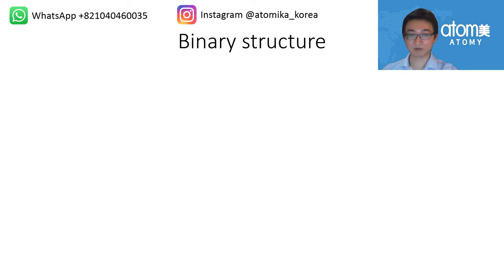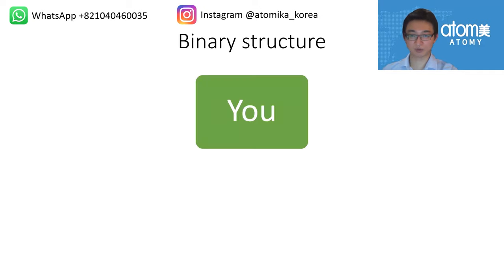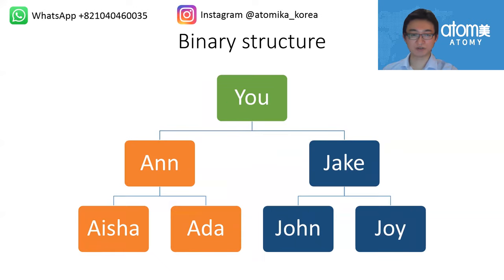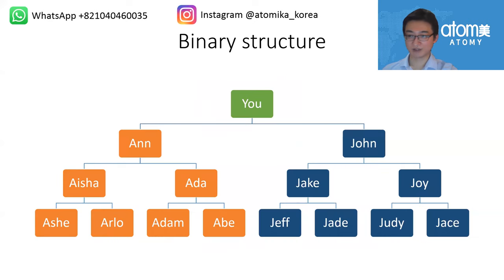When you register in Atomy, you start like everybody else from ground zero. Everything starts with you — you're number one in your business. Underneath you, directly, only two people can be registered, let's say Ann and Jake. All other partners you want to add must be registered underneath Ann and Jake, and so on.